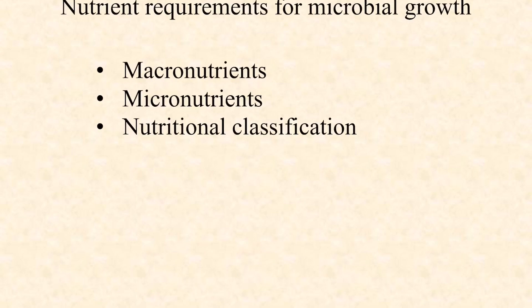In this episode we're going to talk about nutrient requirements for microbial growth. A microorganism that gets into a human being and wants to cause an infection is going to need to grow — it needs to double and divide and go through exponential growth, because just a handful of bacterial cells will not be able to overwhelm our immune system. In order to grow, it needs nutrients, and these nutrients are going to come from your tissues, your blood, your cells, your interstitial fluids.